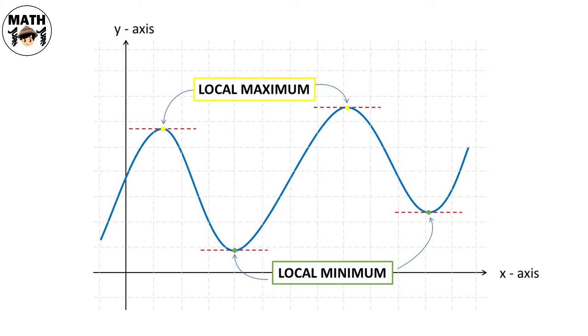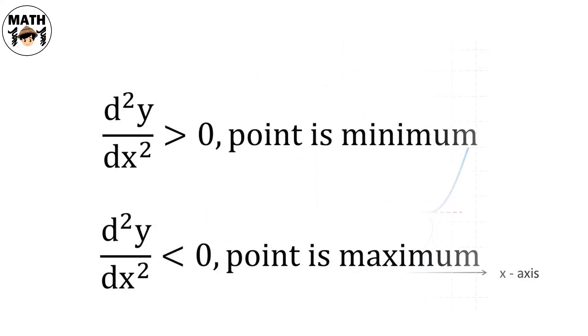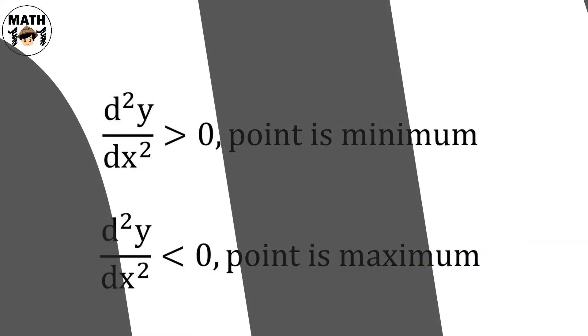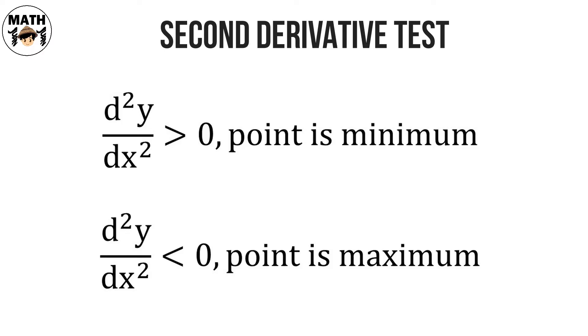After equating it to zero, we'll now solve for the variables that are unknown in the problem. Minsan, pag sinolve natin yung equation, maraming values tayong makukuha. Paano natin ngayon malalaman kung alin doon yung value na hinahanap sa problem? We can use the second derivative test to determine kung maximum point ba or minimum point yung nakuha nating sagot. We solve for the second derivative. If it's greater than zero, the point is minimum, and if it's less than zero, the point is maximum.